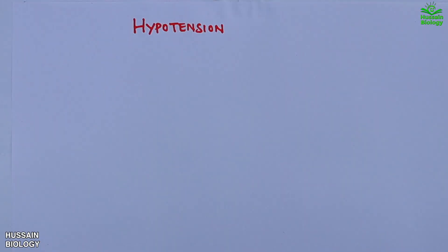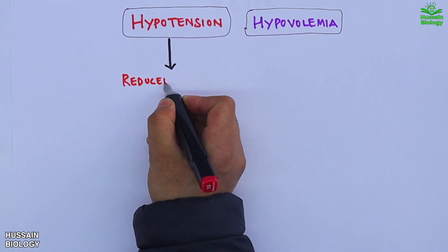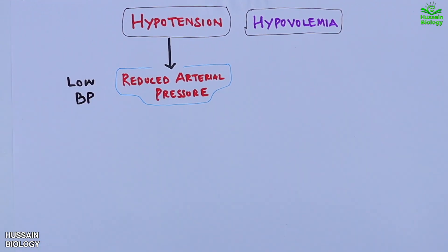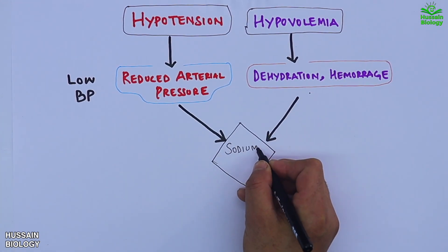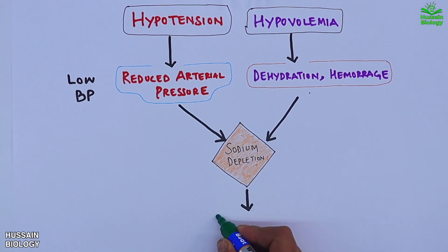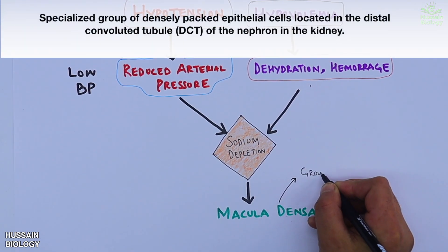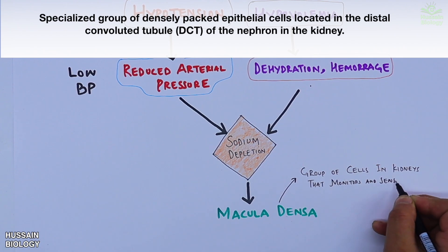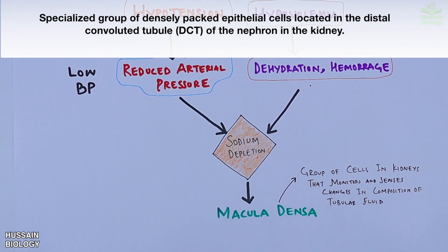There are two important factors that trigger the RAS: hypotension and hypovolemia. Hypotension leads to reduced arterial pressure, that's low BP, whereas hypovolemia leads to dehydration and hemorrhage. Both events drive sodium depletion. This sodium depletion is sensed by the macula densa, a group of cells in the kidneys that monitors and senses changes in the composition of tubular fluid.